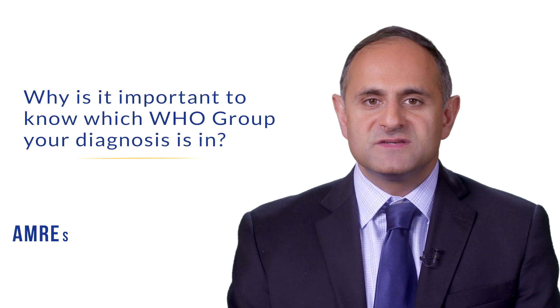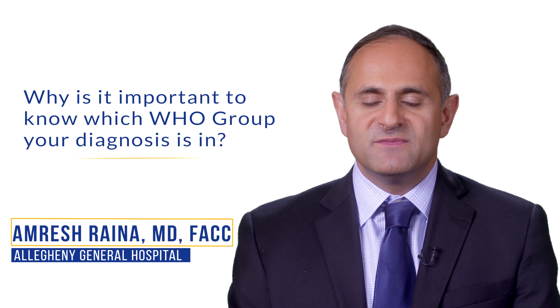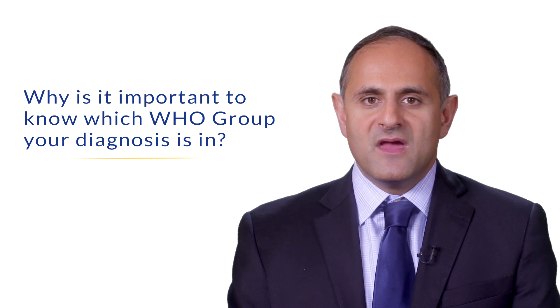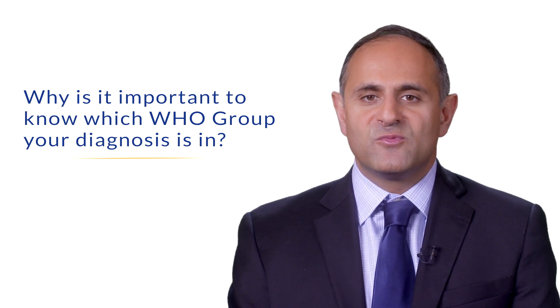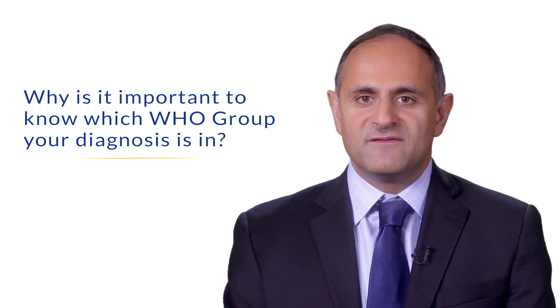It is important to know which WHO group you are in because the treatment differs dramatically from one group to another. Patients with WHO group 1, that is pulmonary arterial hypertension, are the ones that we most classically treat with pulmonary vasodilating or pulmonary vasoremodeling therapies such as PDE5 inhibitors, ERAs, or prostacyclin agents.